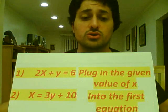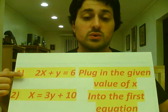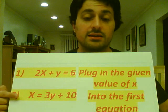The first thing we're going to do is look at the two equations that we have. We have 2x plus y equals 6 and x equals 3y plus 10.